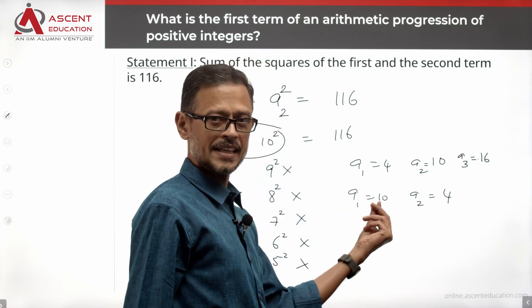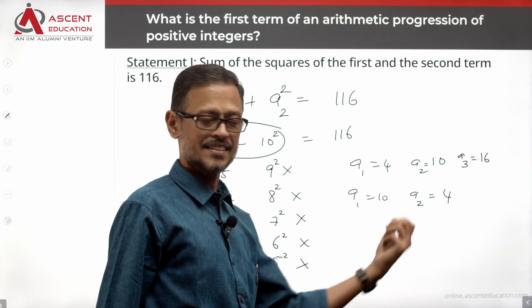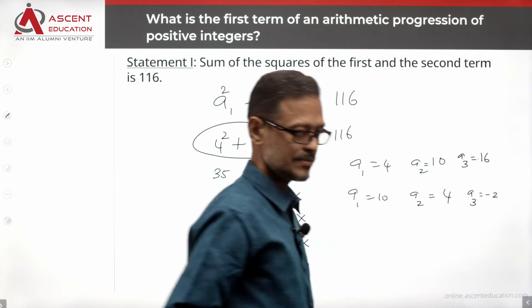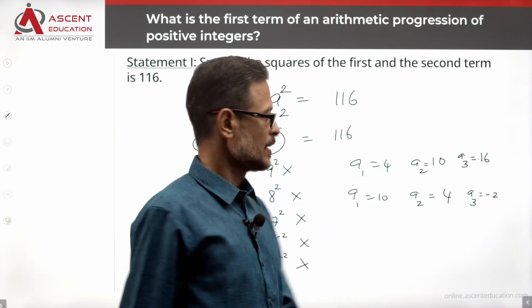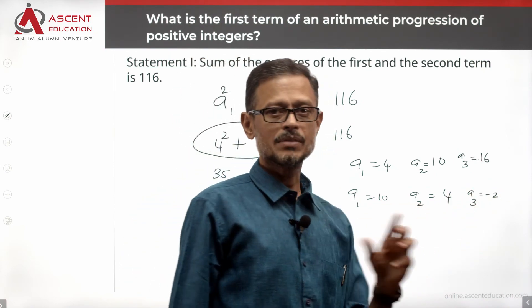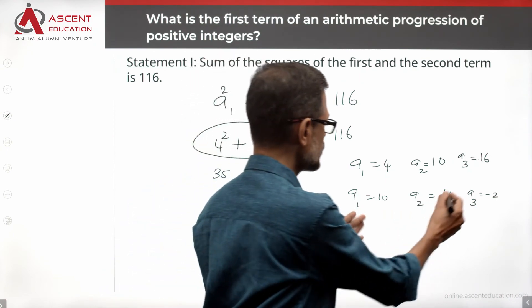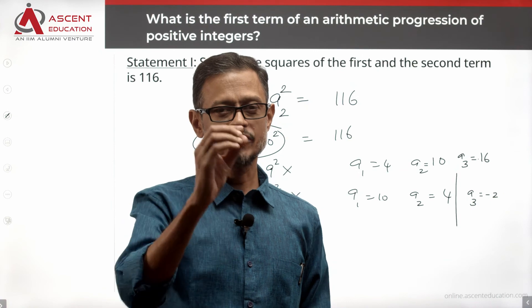Second possibility: a1 is 10, A2 is 4. Common difference is minus 6. So the third term a3 will be equal to minus 2. It is an arithmetic progression of positive integers. If you look at the progression, the progression is going to have negative numbers. 10 first term, 4 second term, can we call it an arithmetic progression?